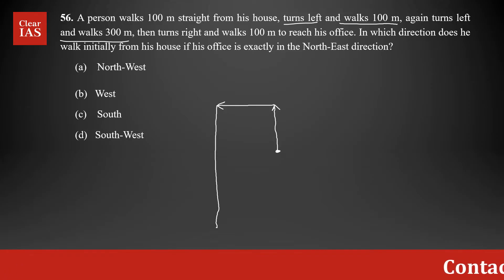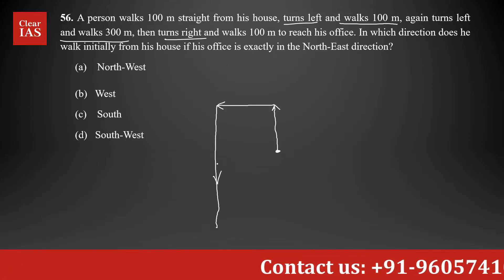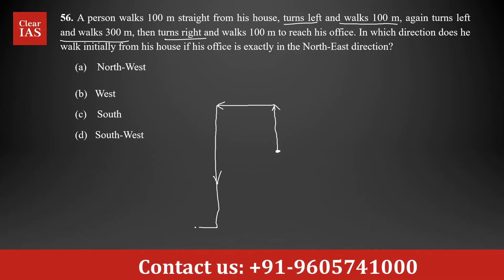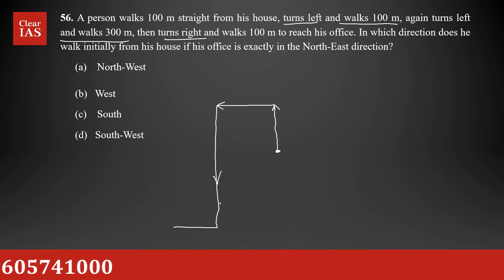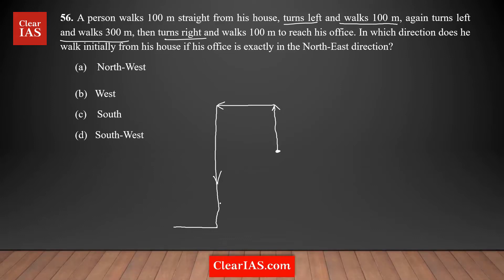Then again he turns right. So right now he is moving towards south. Right side means in this direction. You should be very comfortable with directions — if a person is moving in a particular direction, let's say south or north, and you're taking a left or a right, you should know where exactly you end up. Then he turns right and walks 100 meters to reach his office. So this is going to be the right from here, and this is the office.